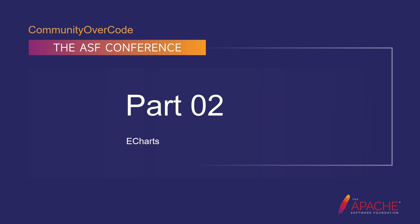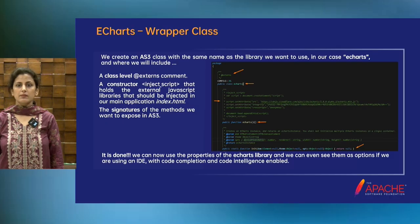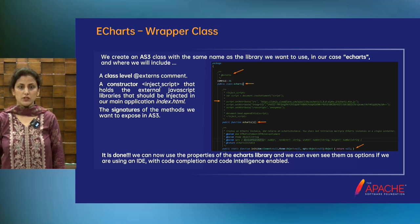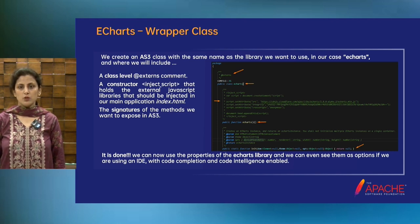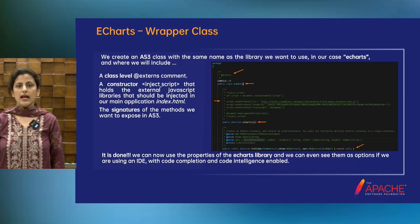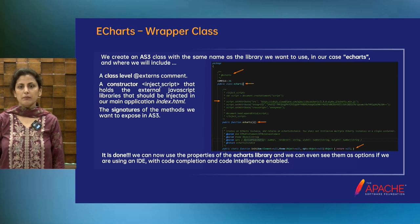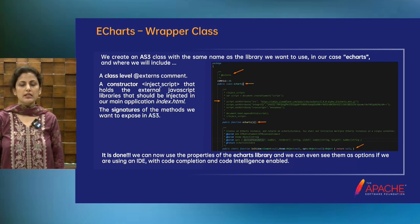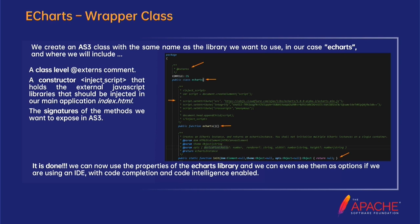eCharts is a powerful JavaScript visualization library that empowers developers to create stunning, interactive charts, graphs, and visualizations in web applications. It is a versatile, feature-rich charting and visualization library designed to make complex data visualization tasks simpler, allowing developers to create interactive and visually appealing charts with ease. Whether you are building dashboards, reports, or data-driven applications, eCharts offers a wide range of chart types, customization options, and animation capabilities.